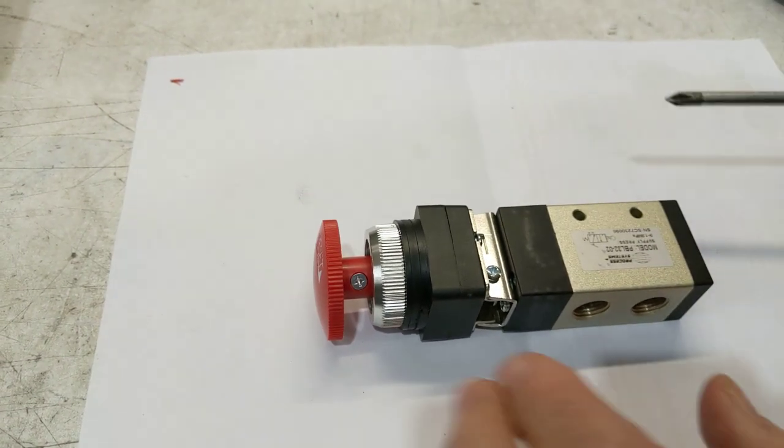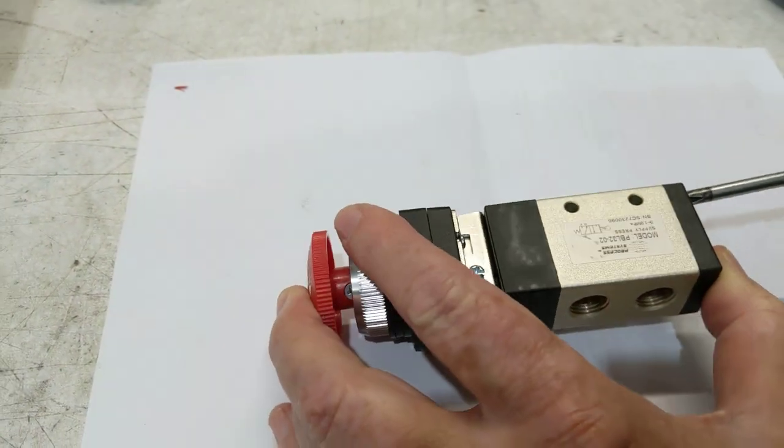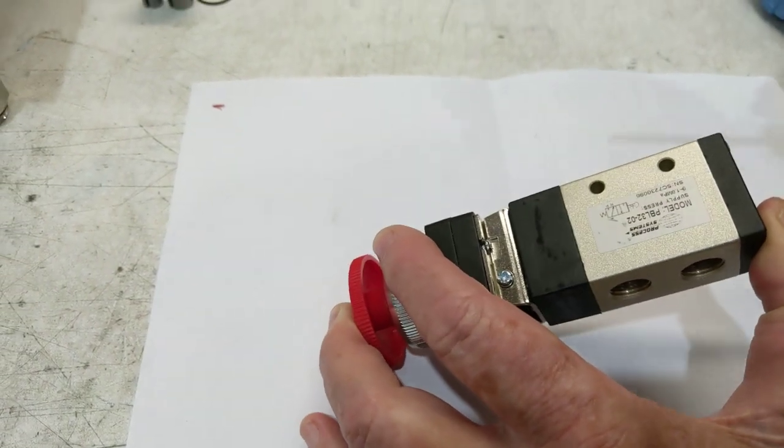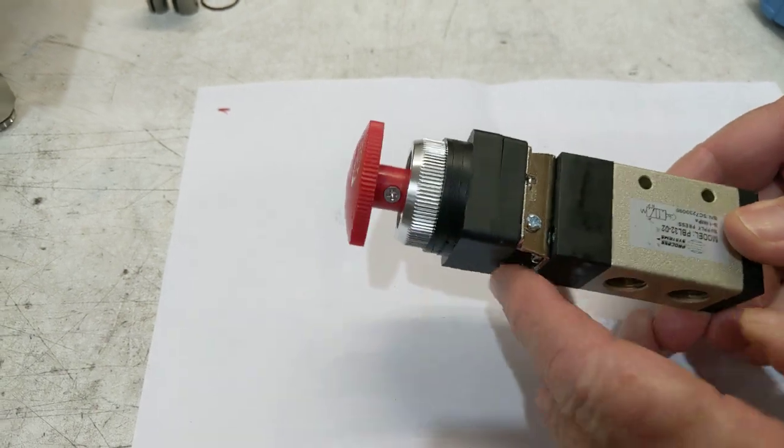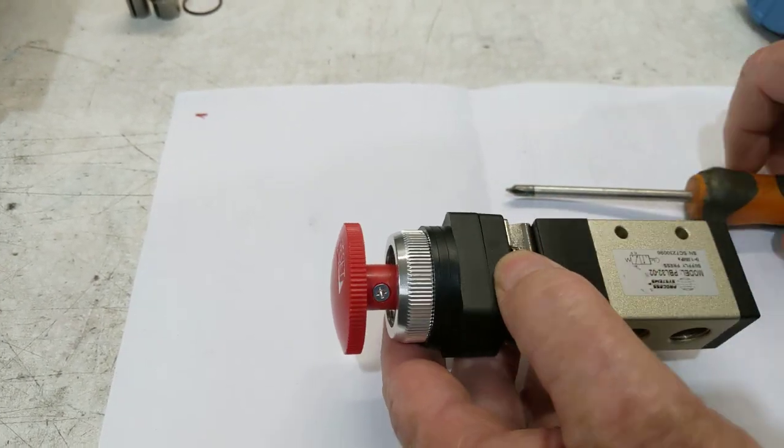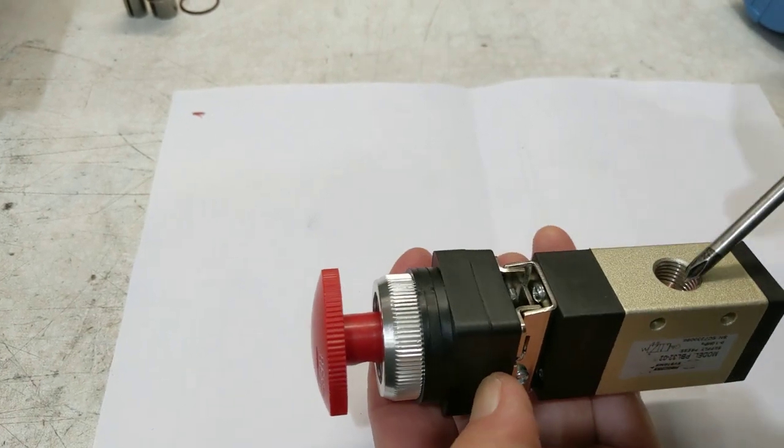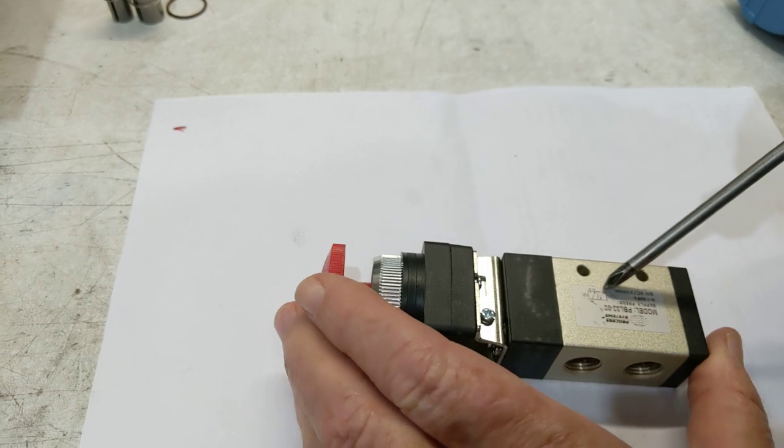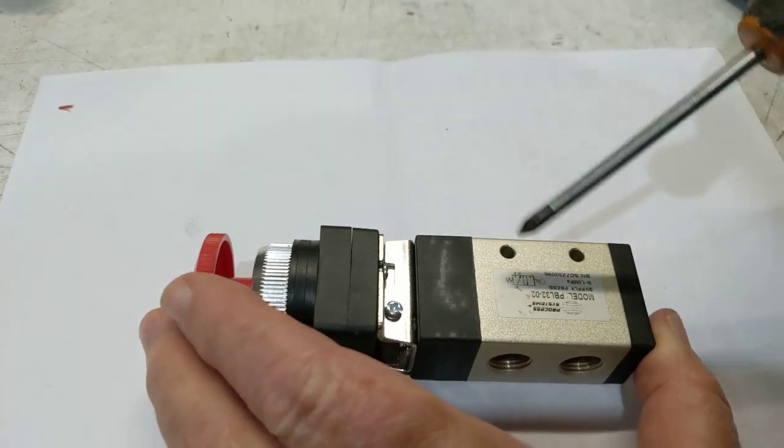Stored on the shelf could get a little bit dry, so this is a three-two valve. We've got air in, cylinder port out, and an exhaust port. It shows the information on the actual back here.